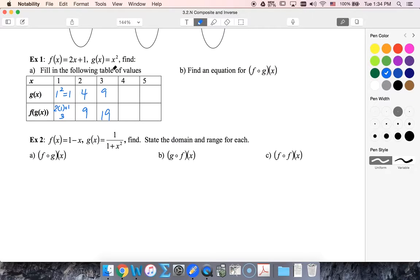Again, I'll take 4 and square it, get 16, 32, 33. And now I'll take 5 and square it, so I get 25, and then 2 times 25 plus 1 is 51.